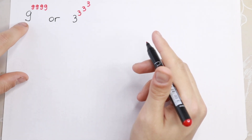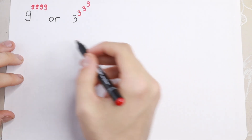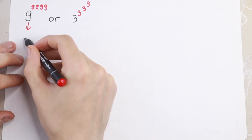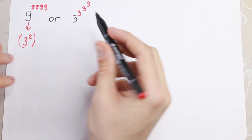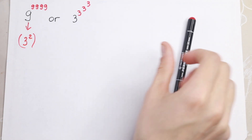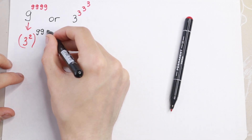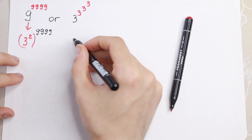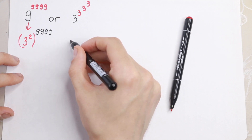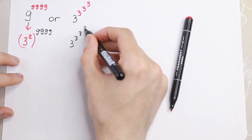First of all, we can rewrite the left element using a base of 3. So we will write 9 as 3 squared, raised to the power 9^(9^9). And on the right hand side we'll have the same: 3 to the power 3^(3^3).